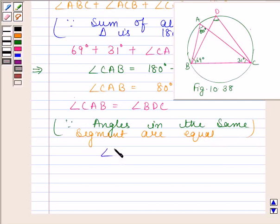Angle BDC is equal to 80 degrees. Hence, the required answer is 80 degrees. This completes the session. Bye and take care.